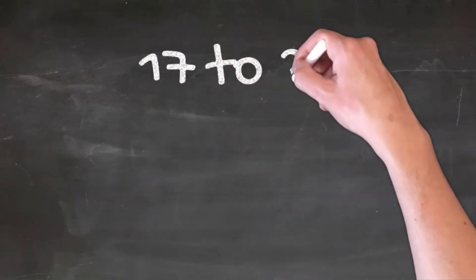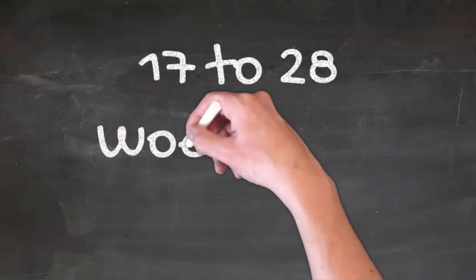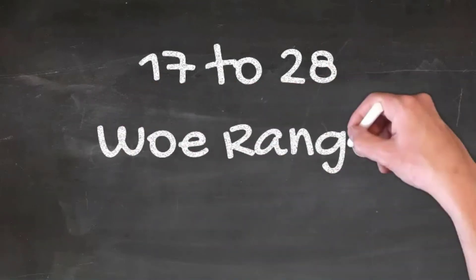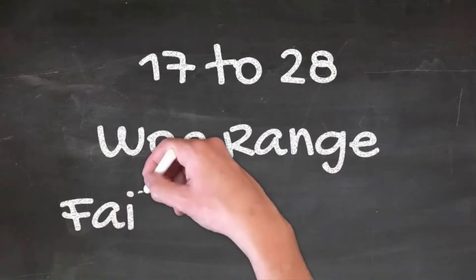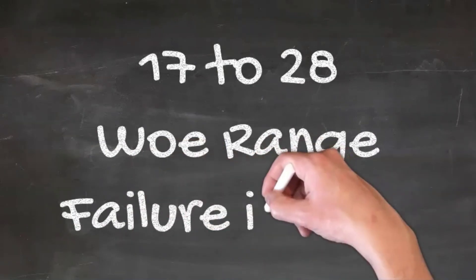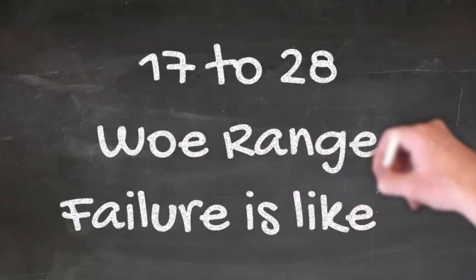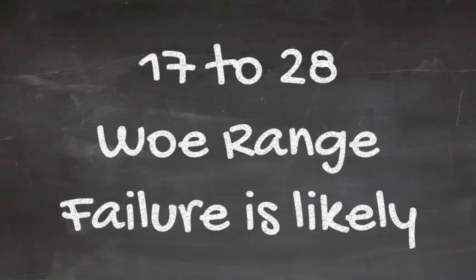And lastly, a score from 17 to 28 means that your project health is in the woe range. This implies that at this point in time, your project is set out to fail. It is important that you look at each factor to see which one needs to be improved to avoid this failure from happening.